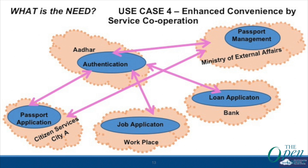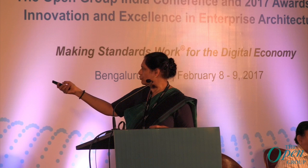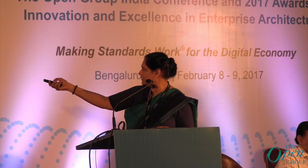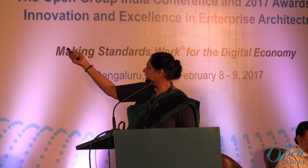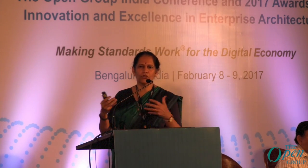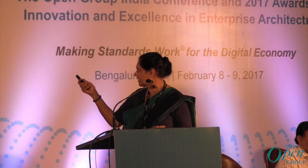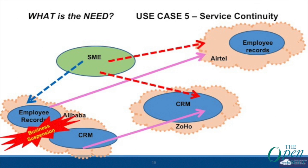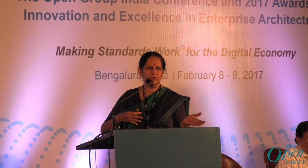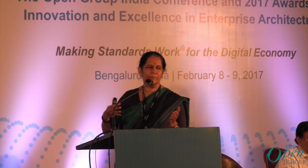Aadhaar is a key example of enhanced convenience by service cooperation. The passport office wants to use Aadhaar, job application systems want to use Aadhaar, loan applications and banks all want to go to Aadhaar. How do you enable that in a cloud environment? And then there is service continuity — you sign up with a service provider that suspends business for whatever reason. How do you switch seamlessly from one service provider to another without any impact to your business?